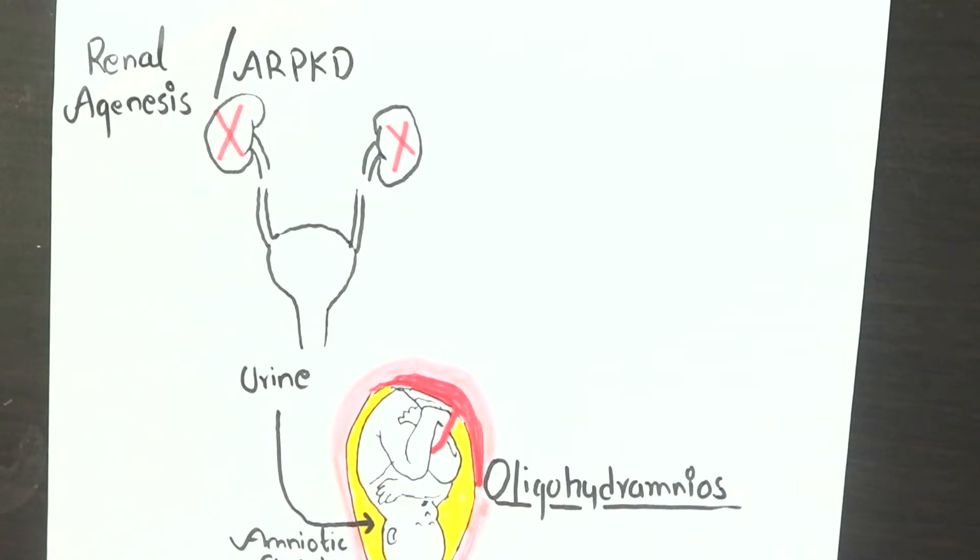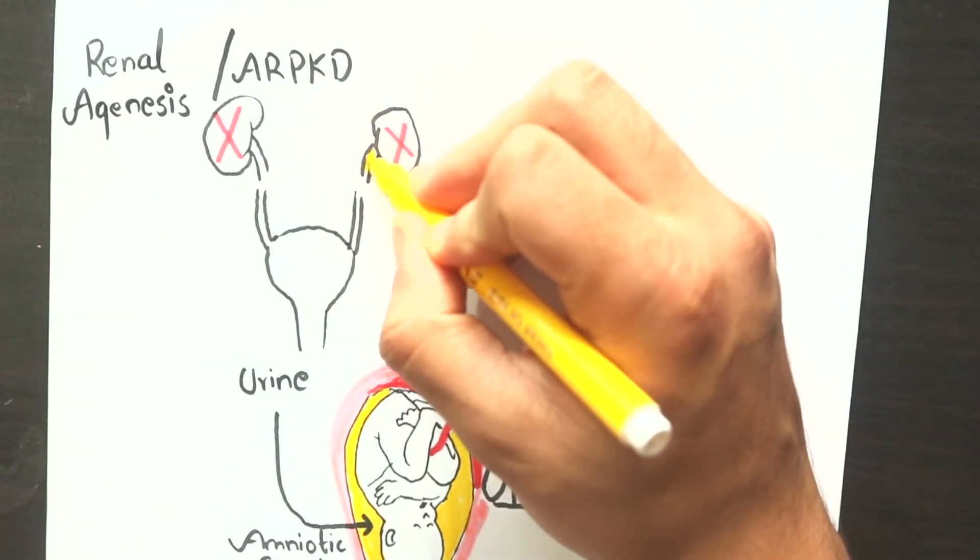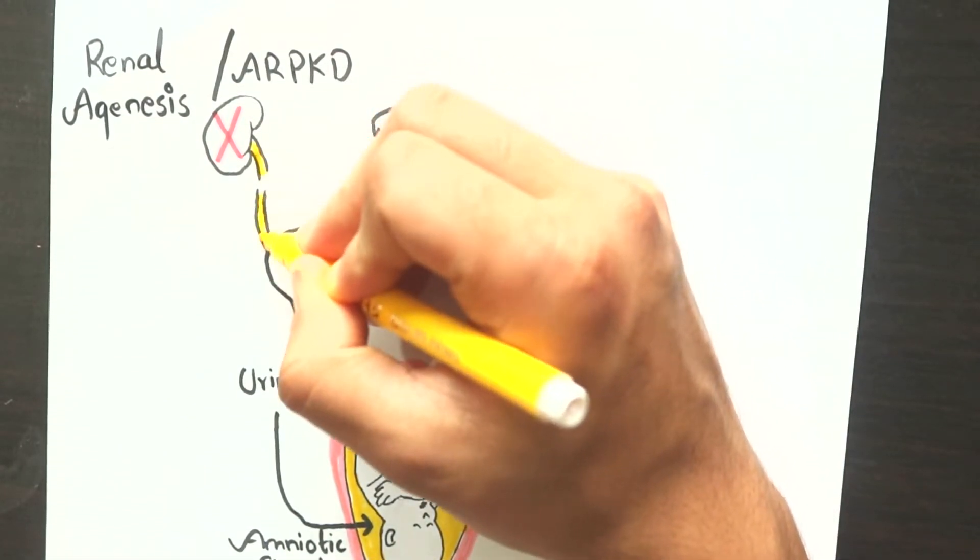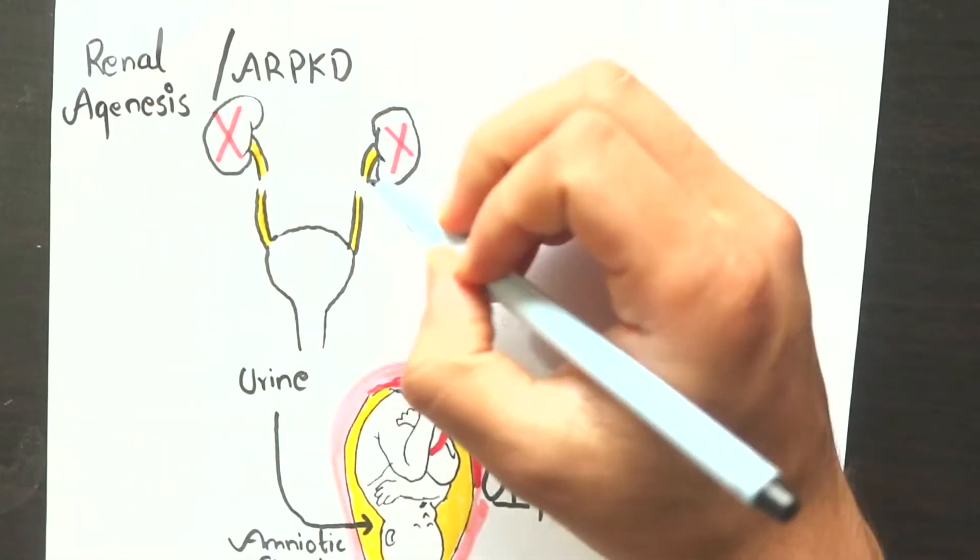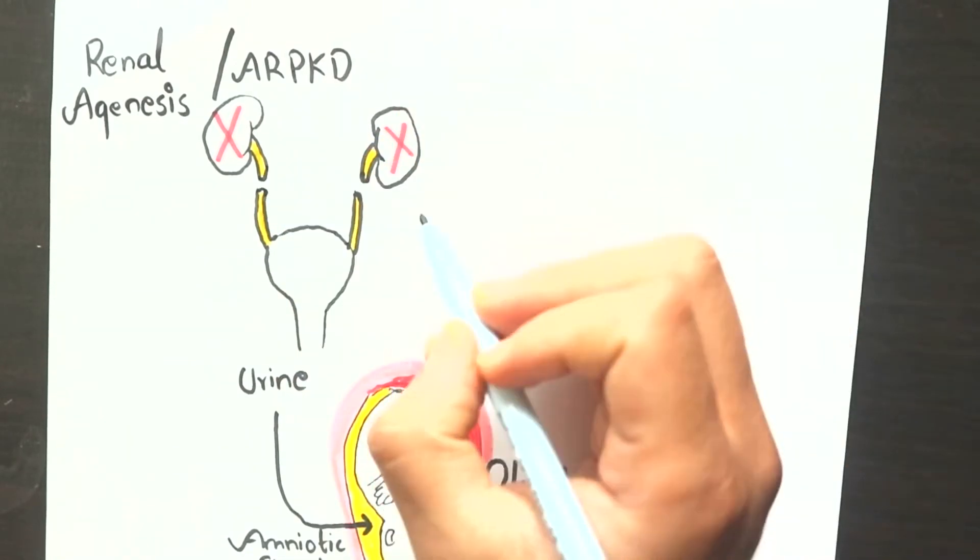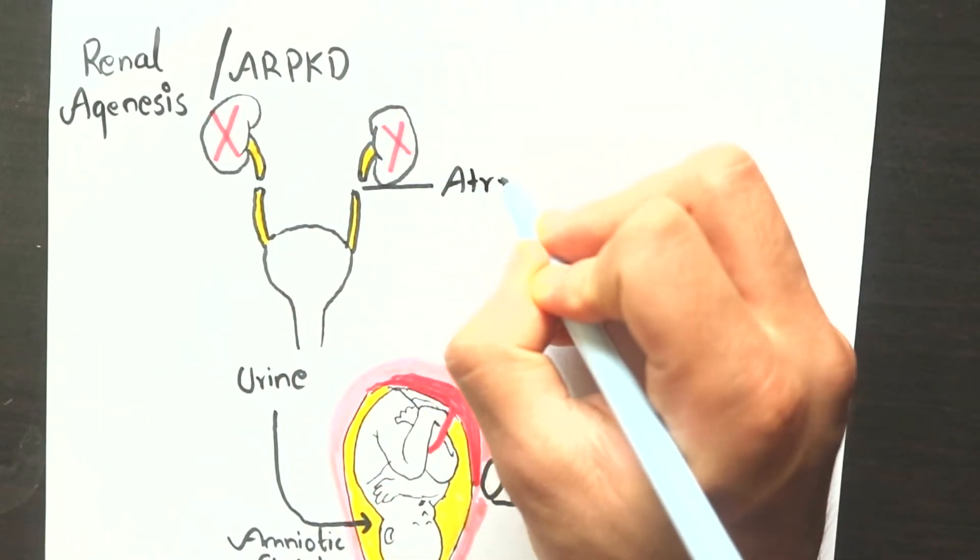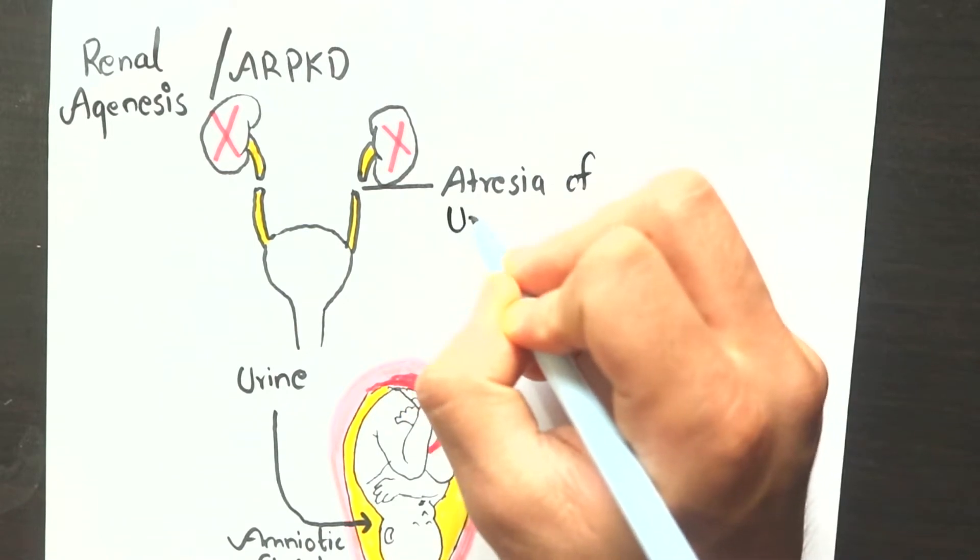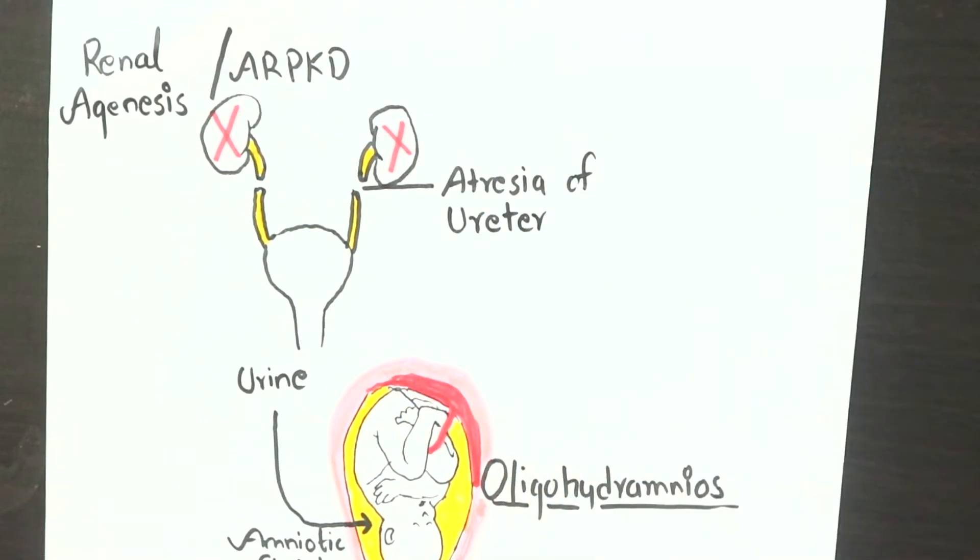There can be atresia of ureter, where the normal passage of ureter is closed, so the urine formed in the kidney cannot flow out. This condition often results in prenatal hydronephrosis.